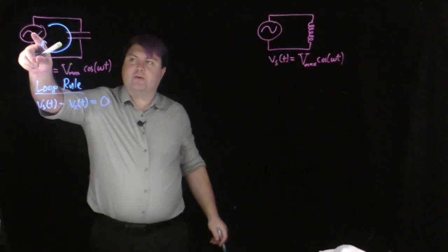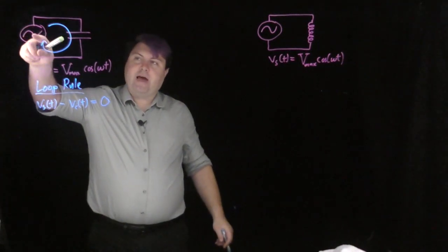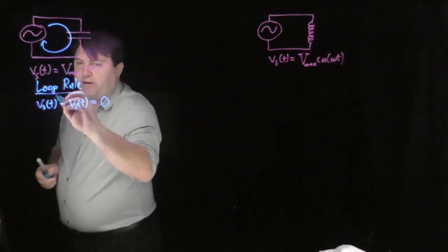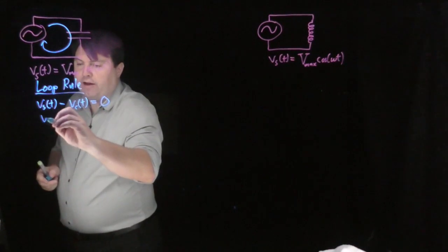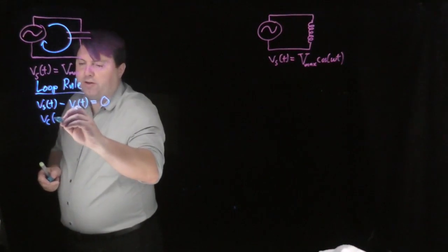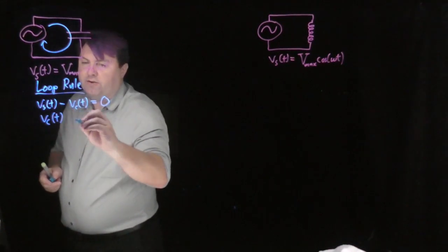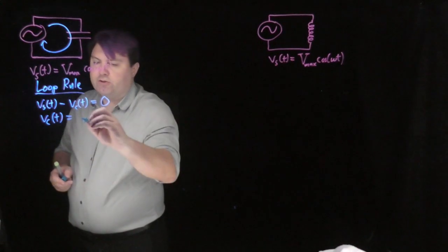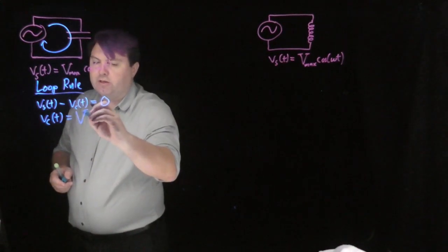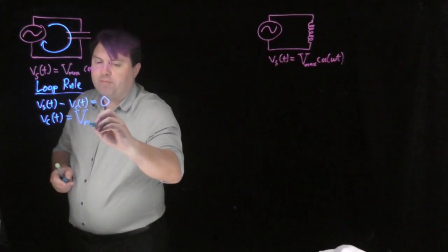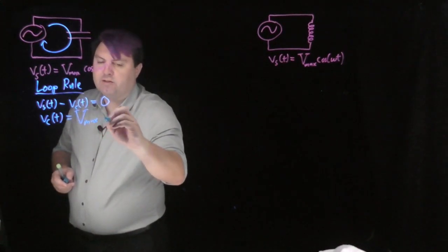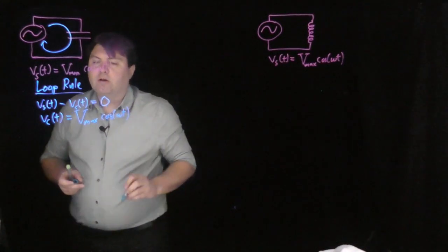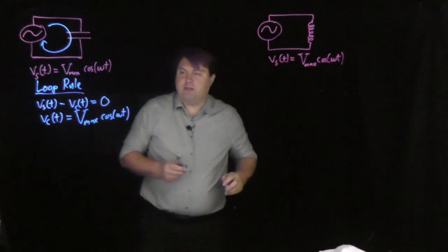Whatever this source adds, this capacitor will drop. So we can write the voltage of our capacitor as a function of time as just equal to the voltage of our source, which is capital V_max cosine(ωt).